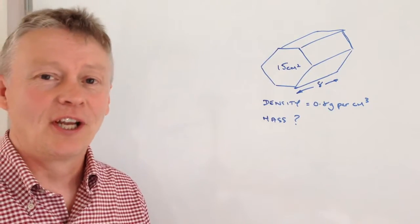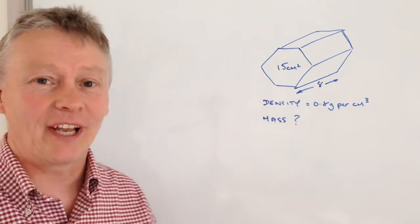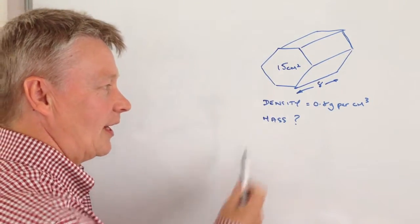Now it's a hexagonal prism made of wood and the density of the wood is 0.8 grams per centimeter cubed. That's important to me because it'll help me then to work out the mass.